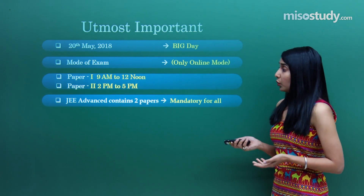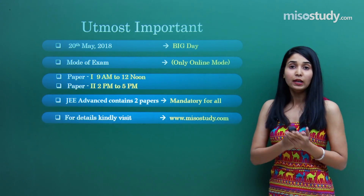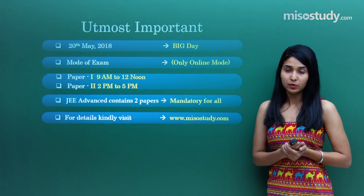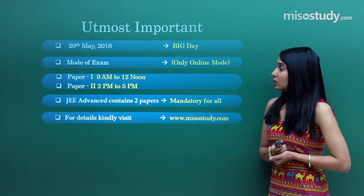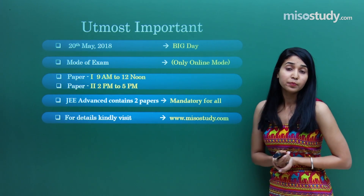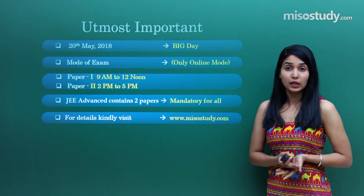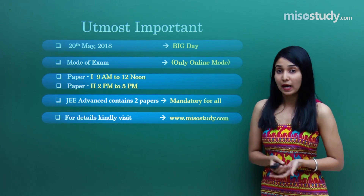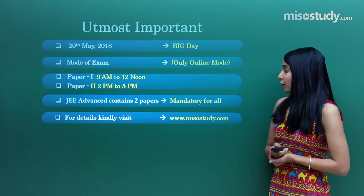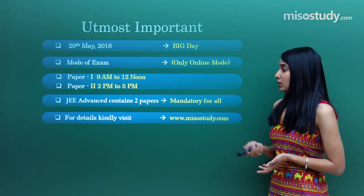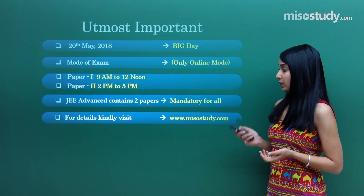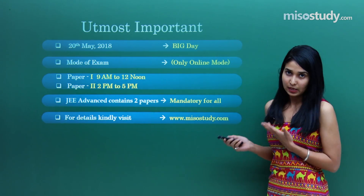We have two exams — Paper 1 and Paper 2 — three hours each. Paper 1 starts from 9 to 12 and Paper 2 from 2 to 5. Time management is the most important thing we'll be talking about throughout the whole strategy. If you have any problems or issues, you can visit our website as well.